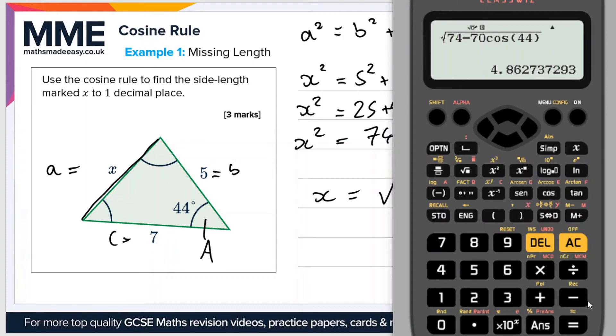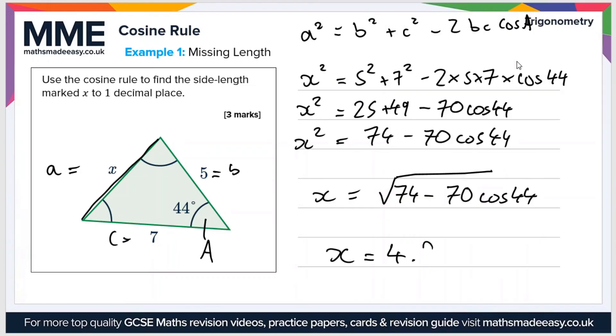That gives us a value of 4.86 or 4.9 to one decimal place. So x equals 4.9 and then there are no units in this question so we'll just leave it as 4.9.